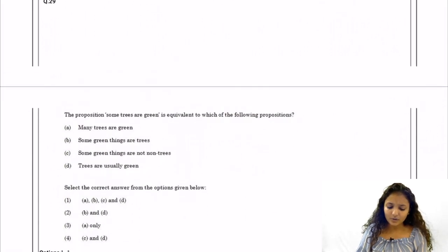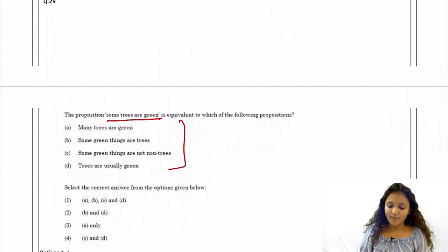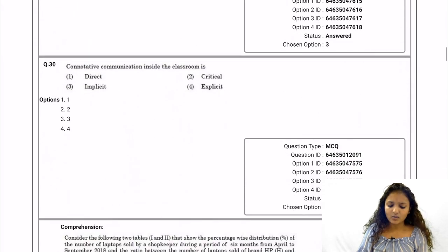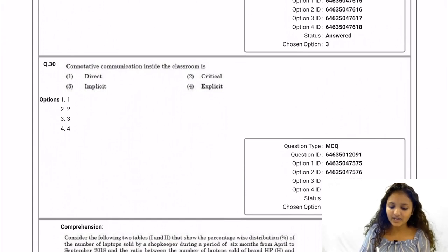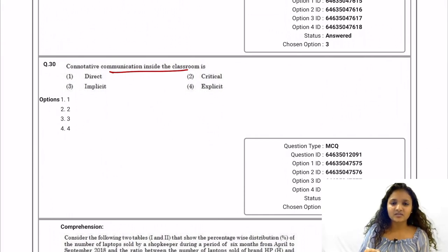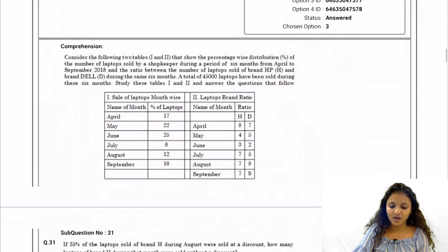Question 29: 'Some trees are green' is equivalent to which proposition? The answer given by NTA is option number one — all of those propositions are true. Question 30: Quantitative communication inside the classroom — connotation is basically giving a symbol or connoting something, which is implied or implicit in nature. Option number three is correct.